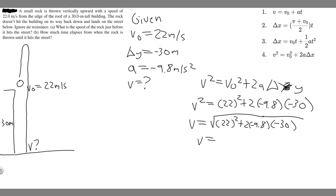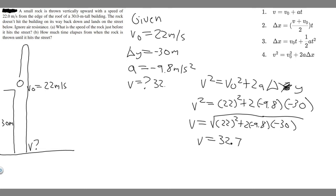Evaluating that, v equals 32.74, which I'll round to 32.7. So the final velocity is 32.7 meters per second — that's your answer to Part A.